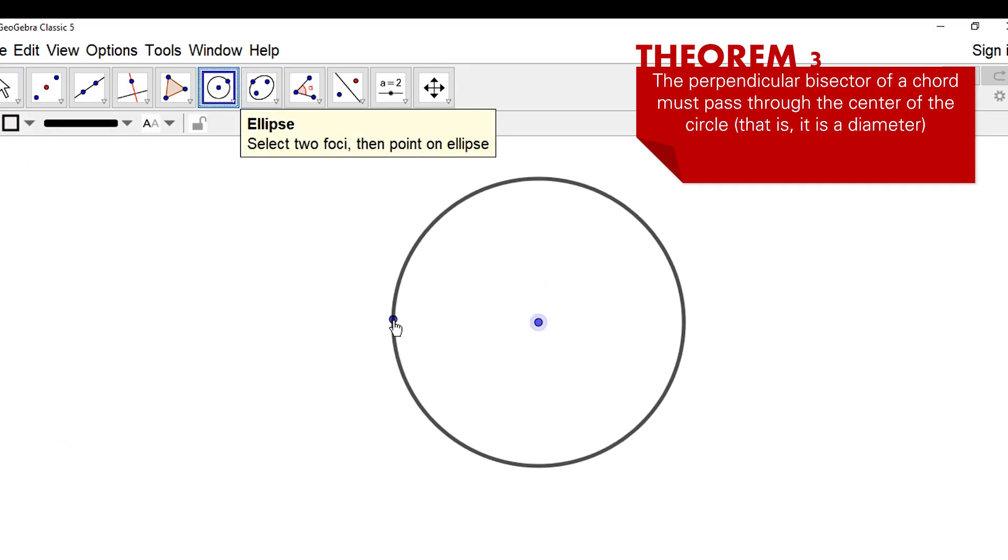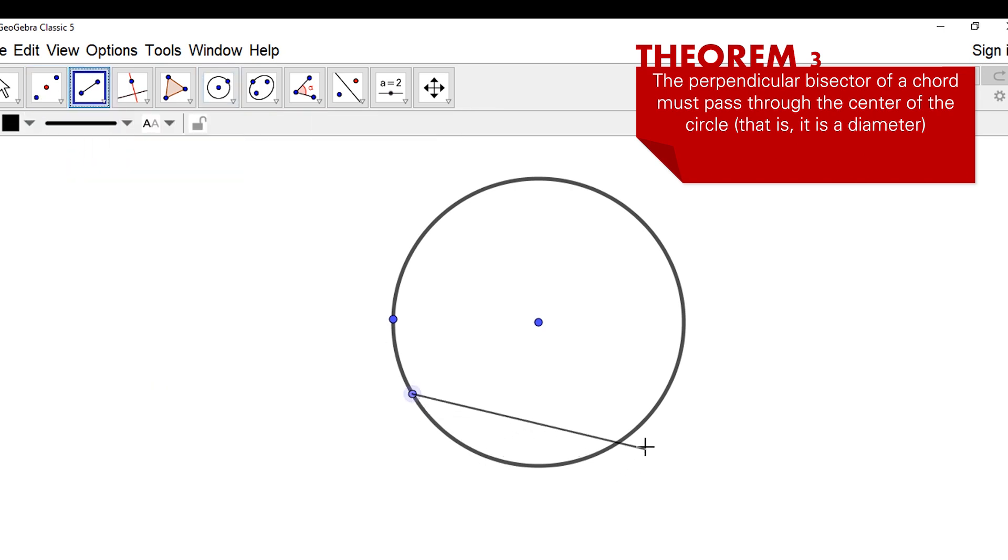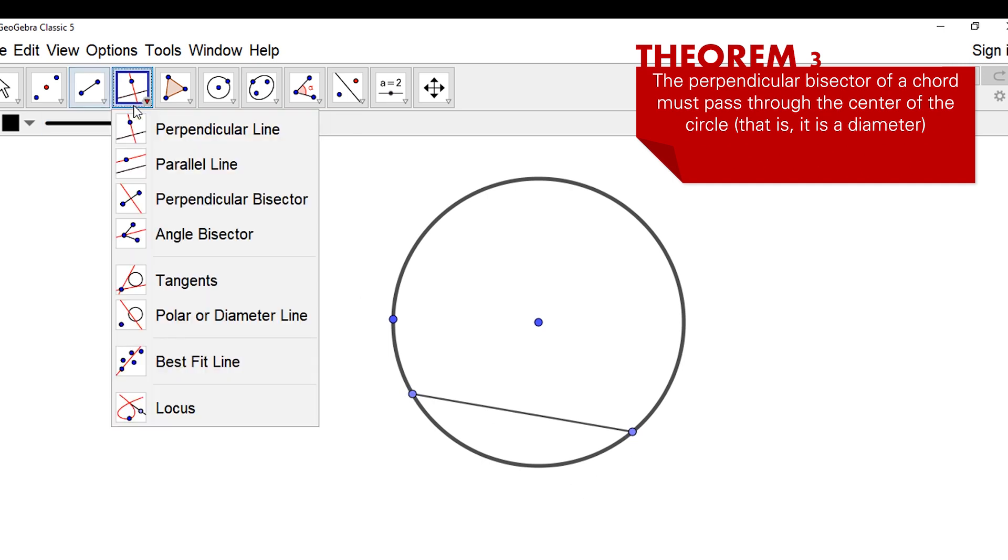Let's have a circle and a chord. We want to show that the perpendicular bisector of this chord, we have a tool for perpendicular bisector, should pass through the center.